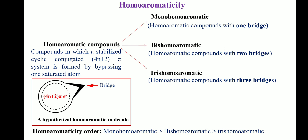The resulting stabilization is expected to be reduced because of poor overlap of the orbitals, but the properties of several such systems suggest that there is substantial stabilization. Depending upon the number of bridges, they have been classified as mono homoaromatic, bis homoaromatic, and tris homoaromatic compounds. Homoaromaticity decreases with increasing number of bridges.